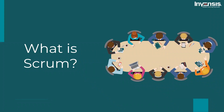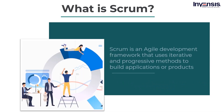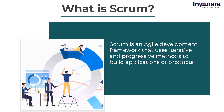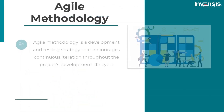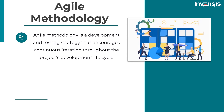Let us get started with our first topic: what is Scrum? Scrum is an Agile Development Framework that uses iterative and progressive methods to build applications or products. It is an evolution of Agile Management. Agile Methodology is a development and testing strategy that encourages continuous iteration throughout the project's development lifecycle. It is basically dividing the entire project into smaller, more manageable parts so that usable software or applications can be developed and released faster.